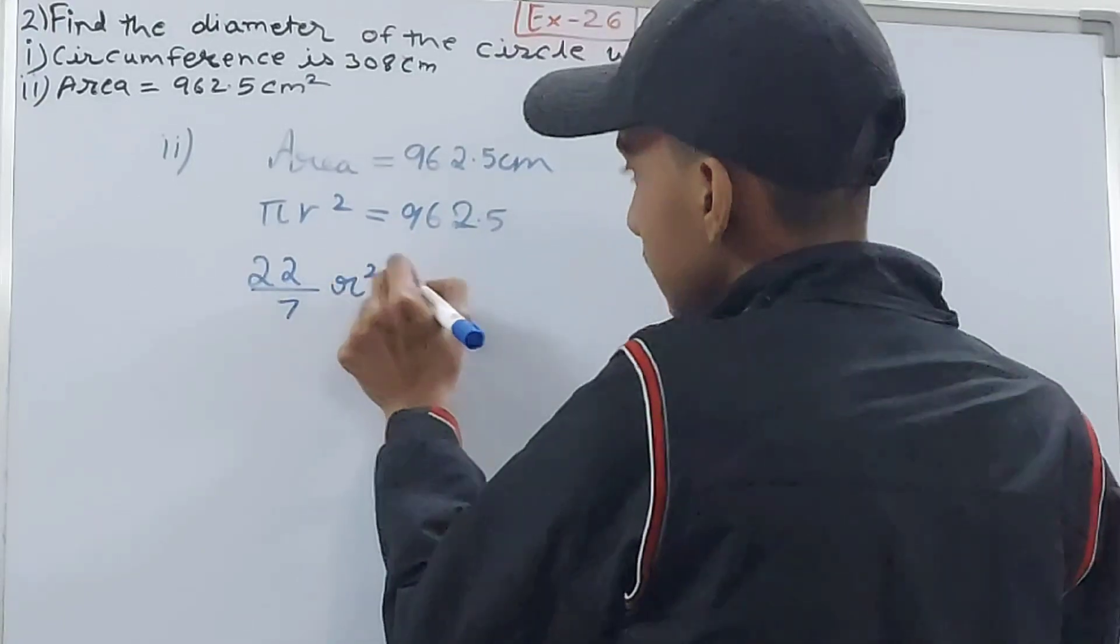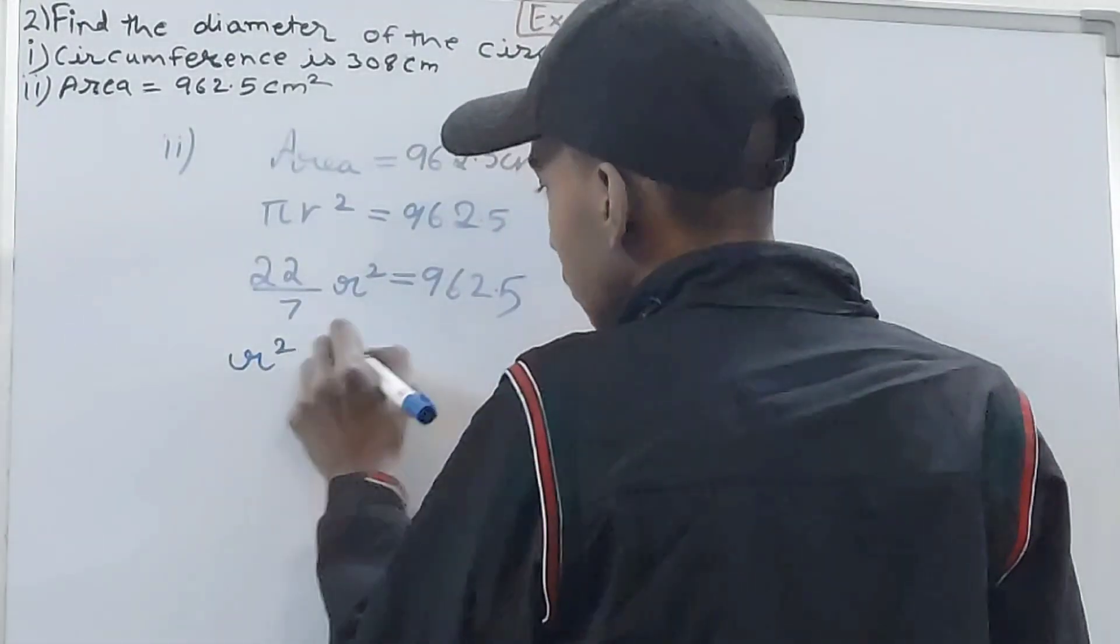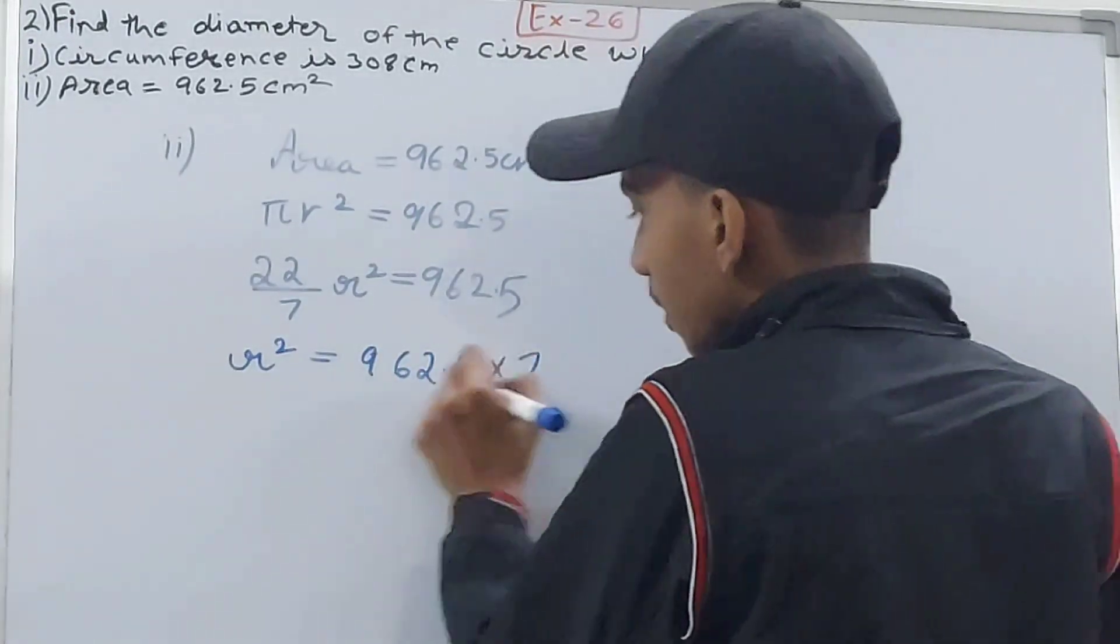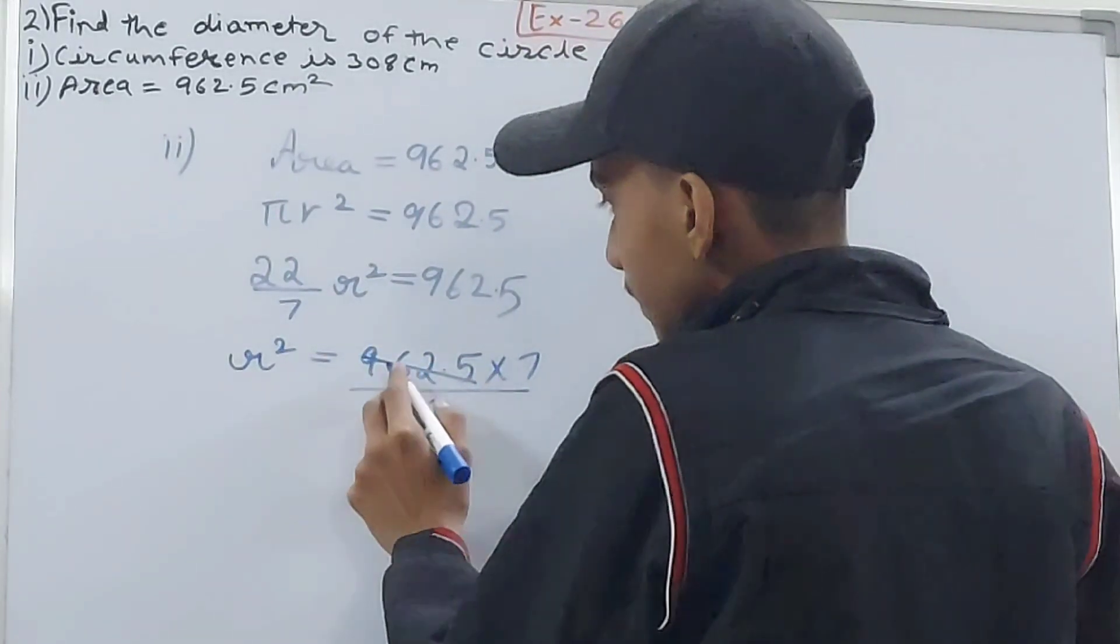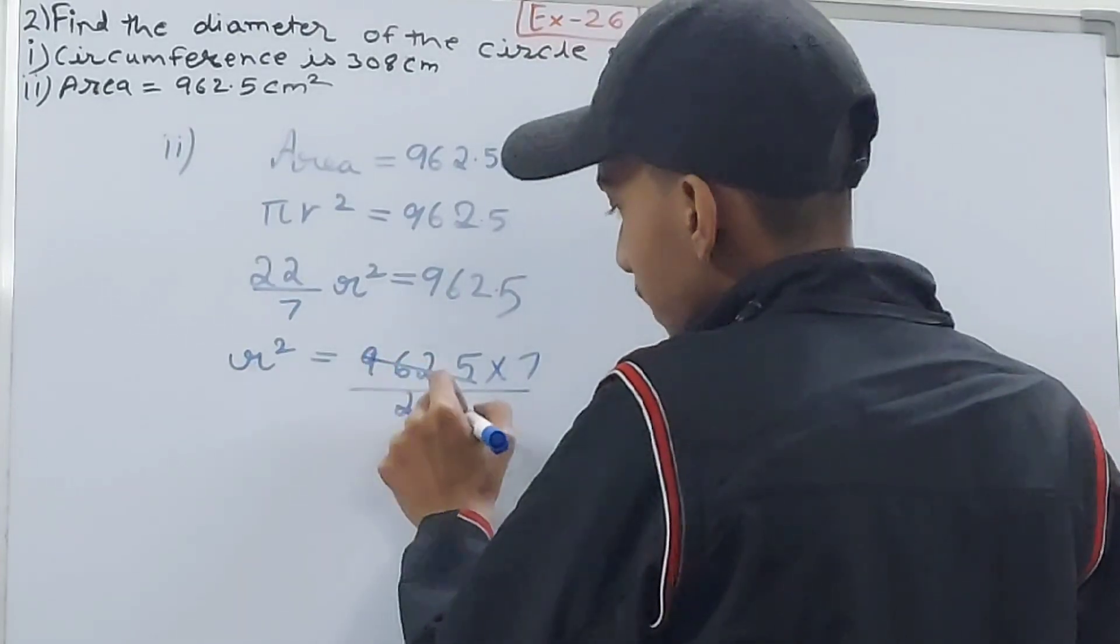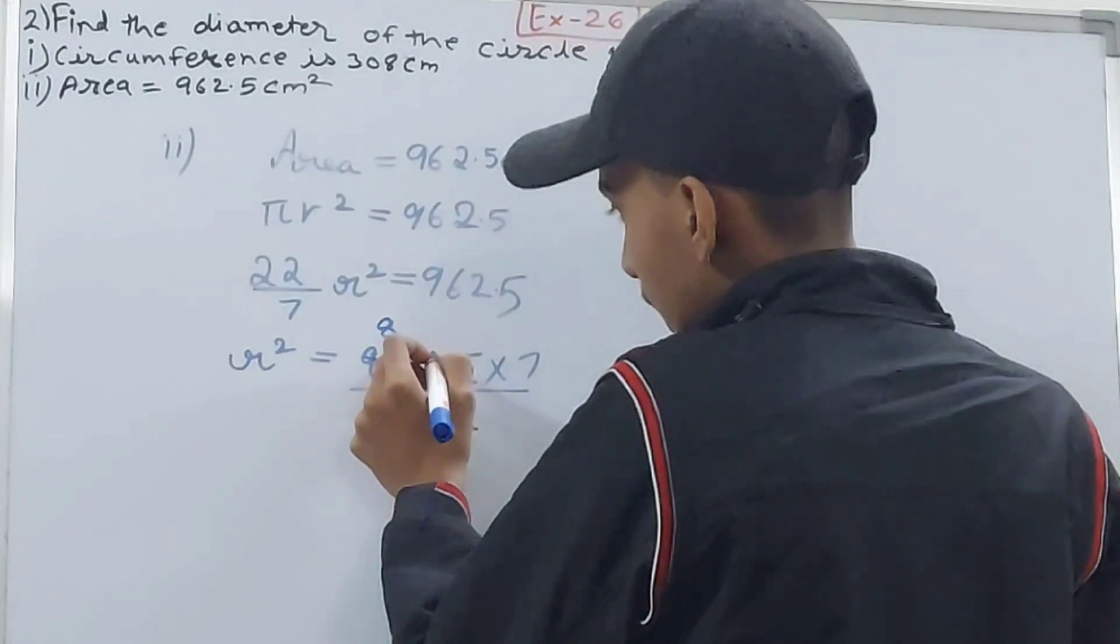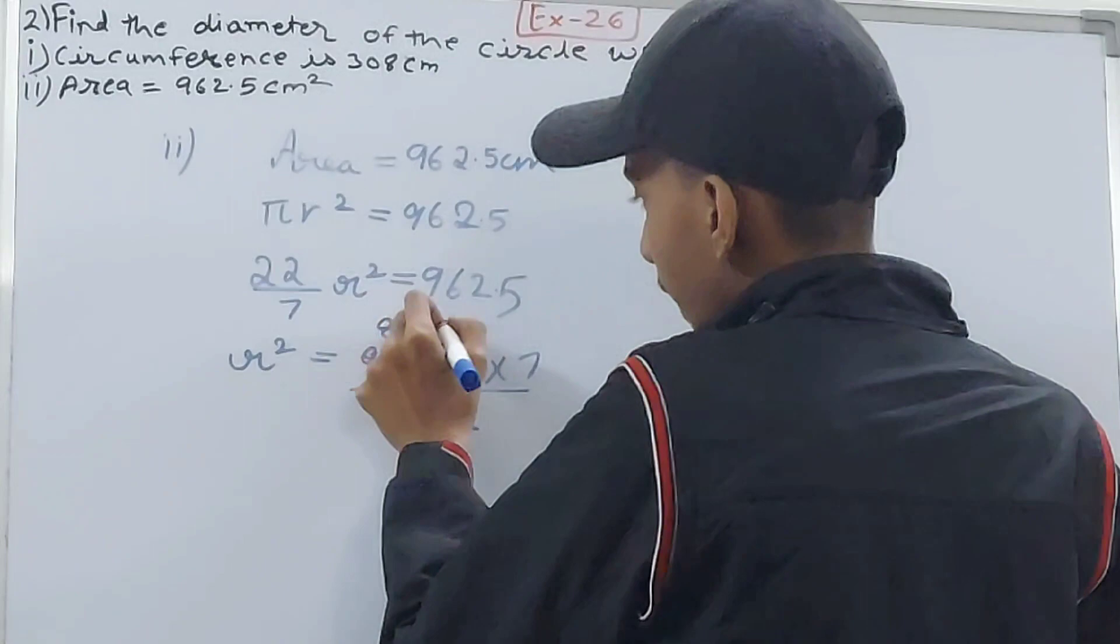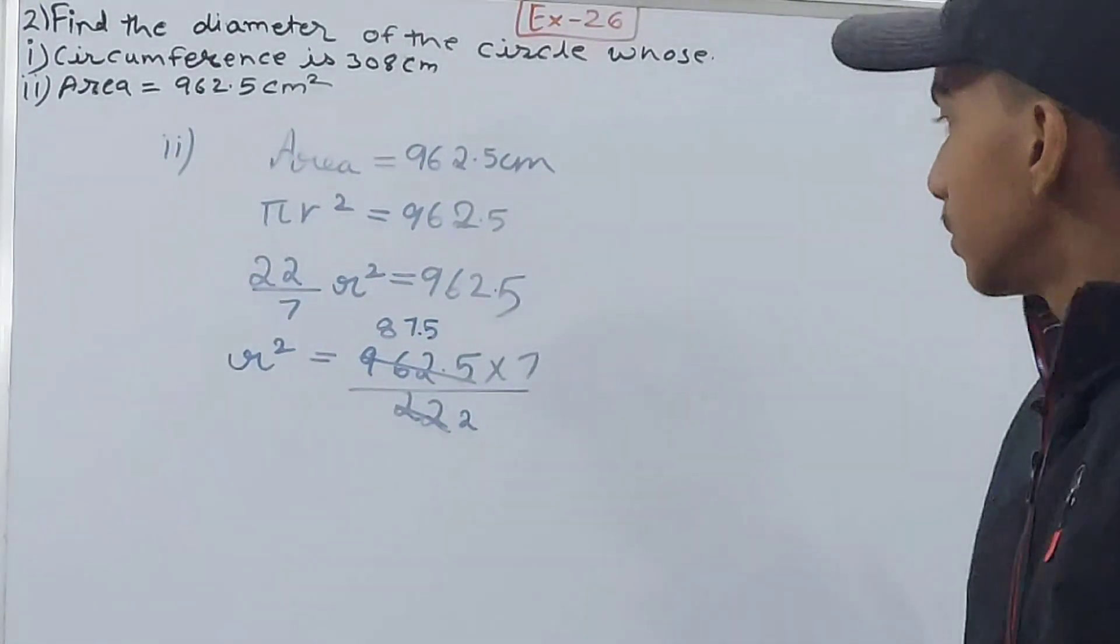Again, let's cancel this and let's cancel this. So this will go 8 times, this will go 2 times. We'll have 43.75 here.